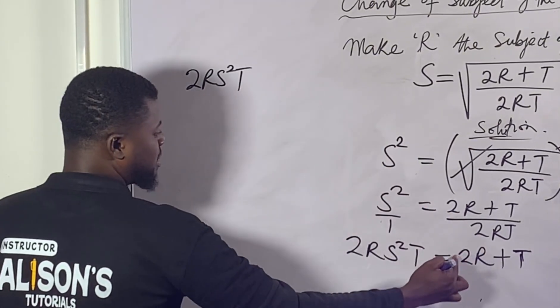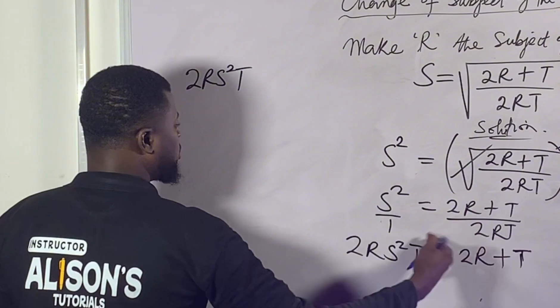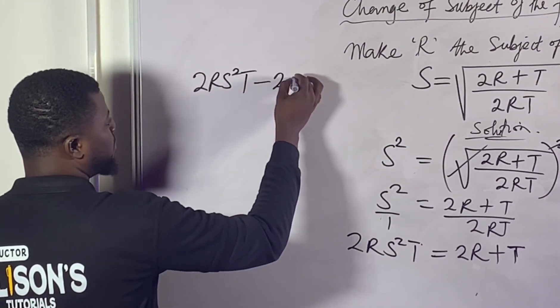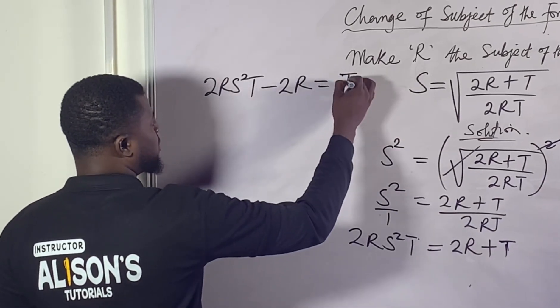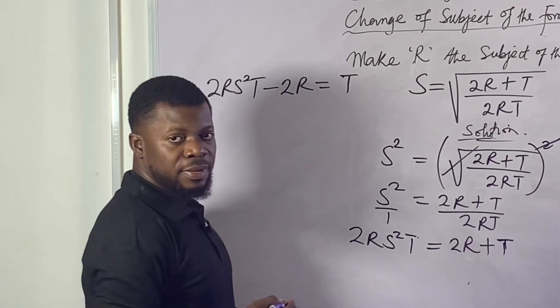When you pull this, keep in mind it's having positive sign. When it crosses over to this part, it changes to negative 2R. Then we'll be leaving T on this part. I hope we are making progress.